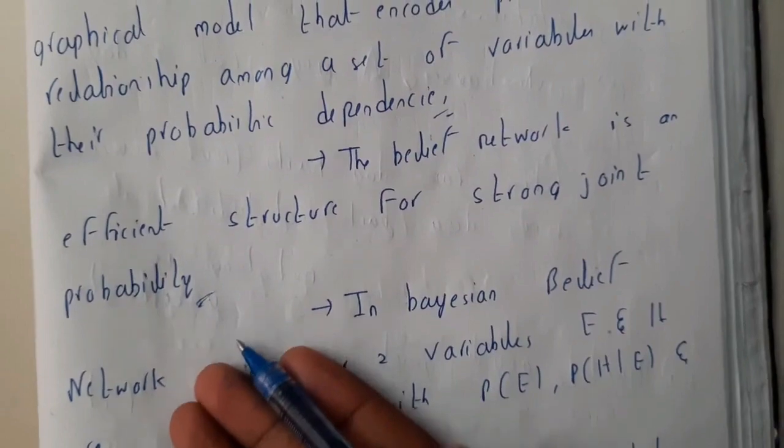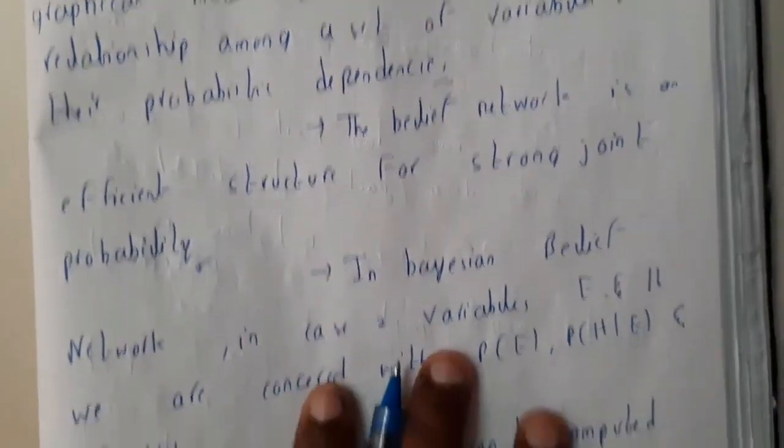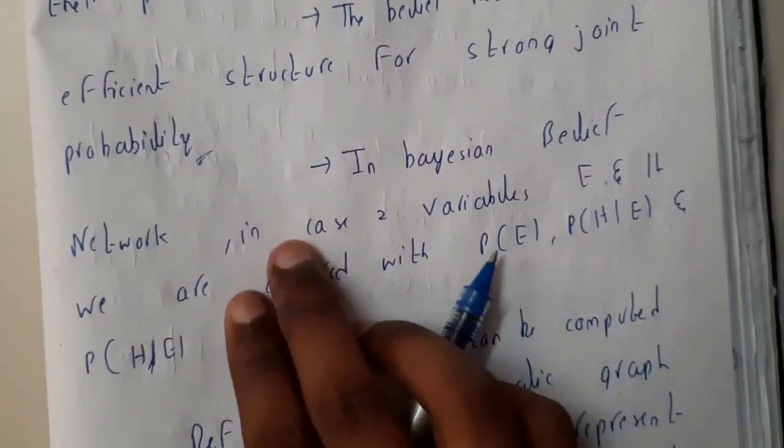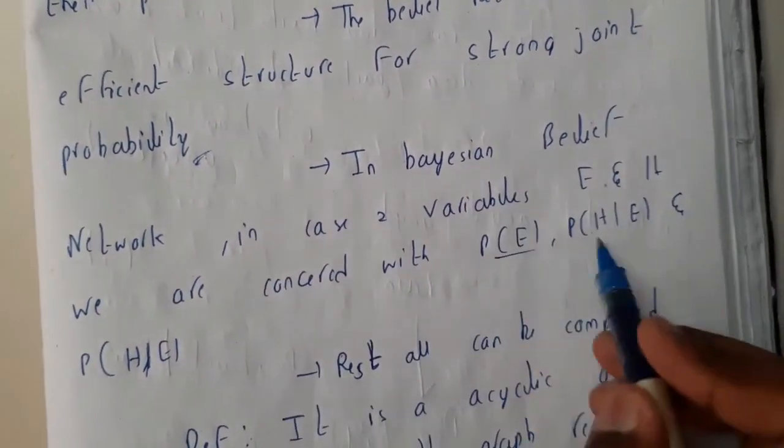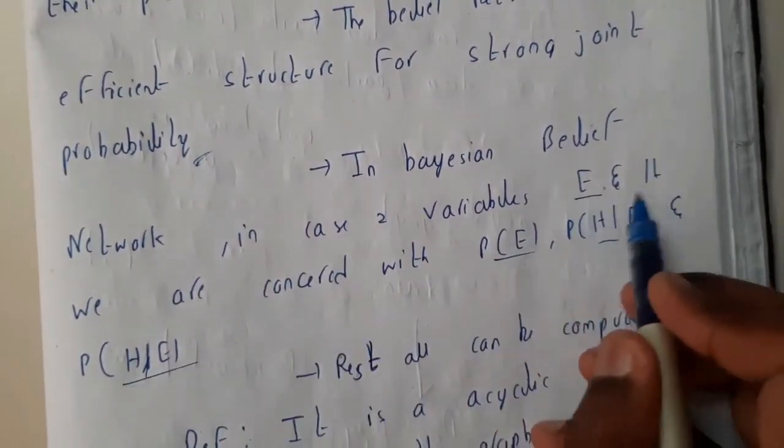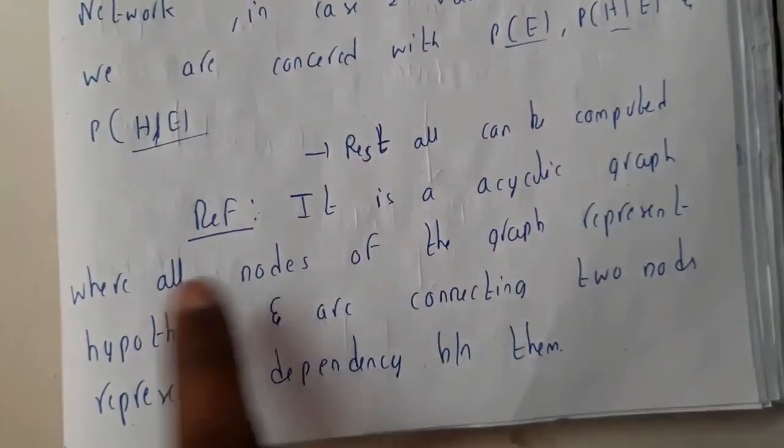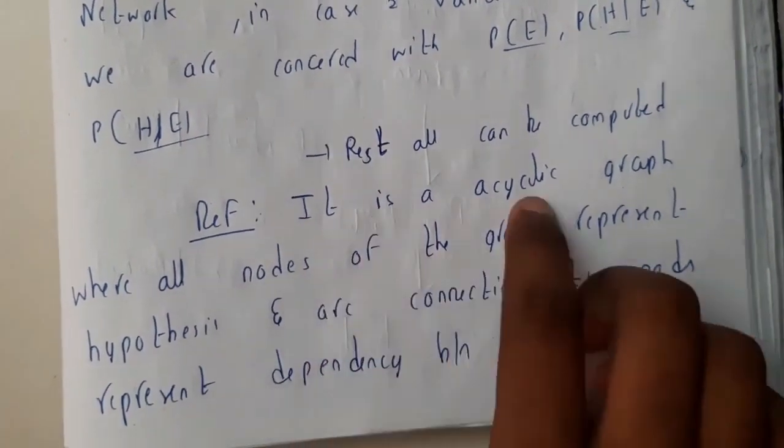The belief network is an efficient structure for strong joint probabilities. Here we'll be using probability joints. In Bayes' belief network, we will be having two different cases and we'll be using these combinations of E and H. Rest all are computable.